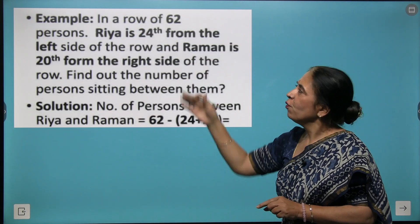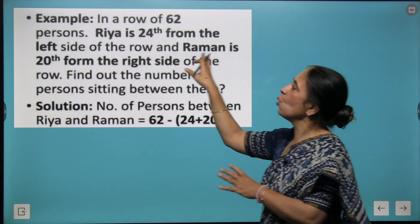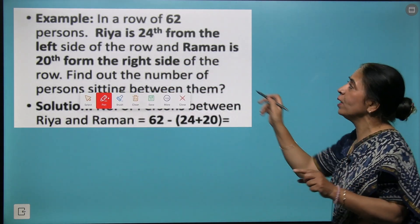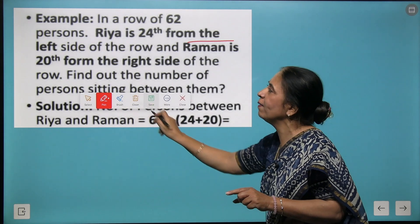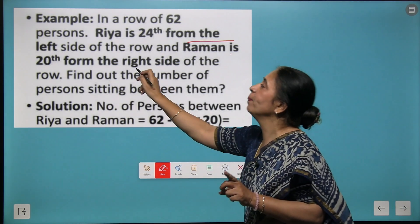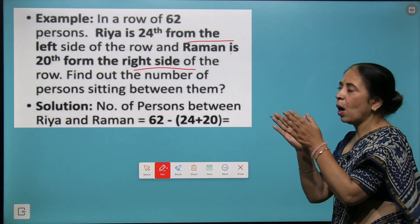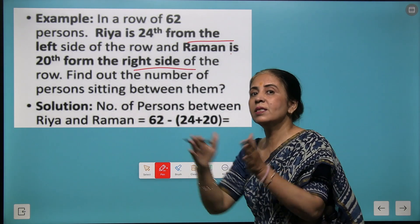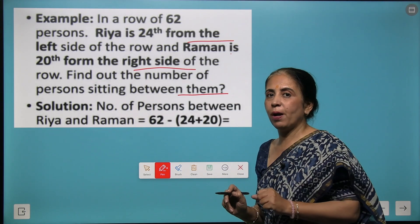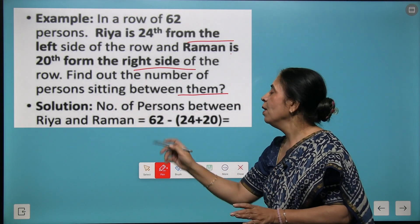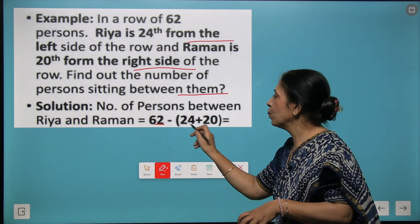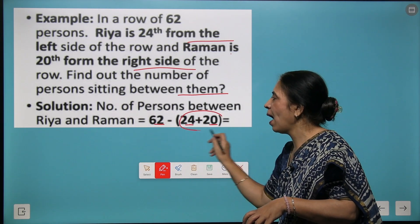We have another example: in a row of 62 persons, if Rhea is at 24th position from the left side and Raman is at 20th from the right side, you want to find the total number of persons sitting between them. To find the total number of persons between them, we will write 62, which is the total number, minus the position of both of them added, and we get 18.